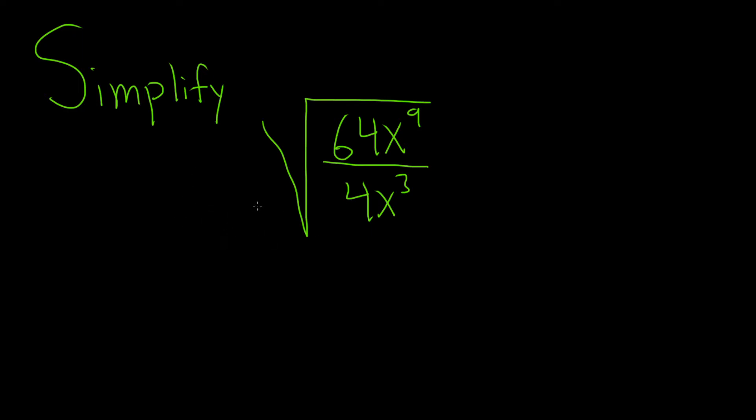In this problem we have to simplify this expression. So since we're trying to take the square root, the goal in a problem like this is to write each of the little pieces, each of the factors, as something squared. So let's go ahead and do that.